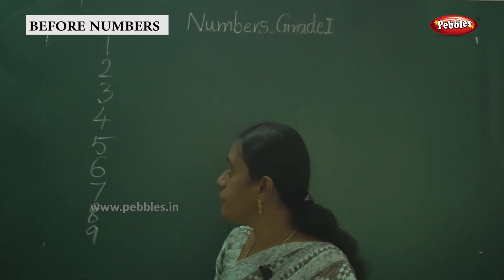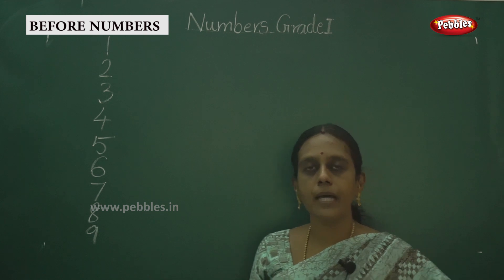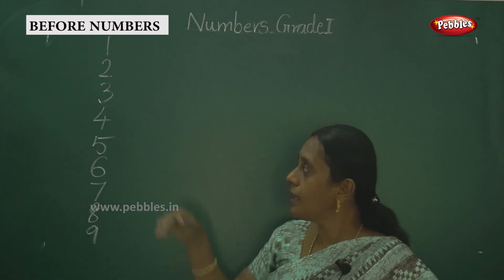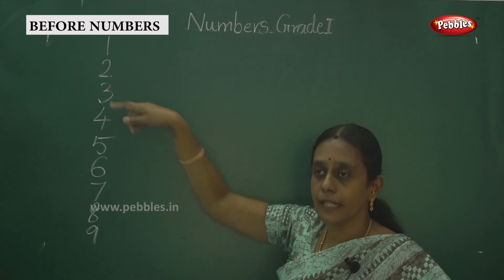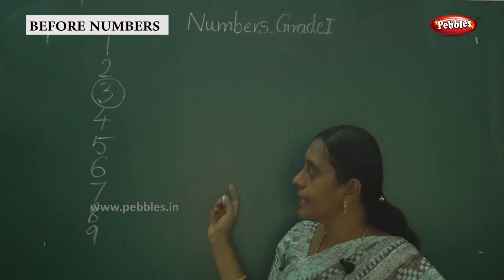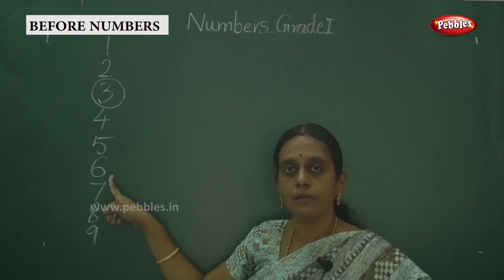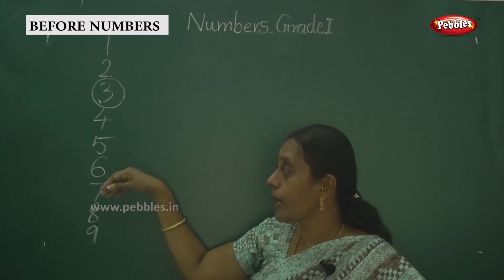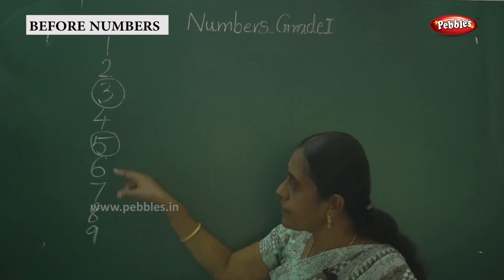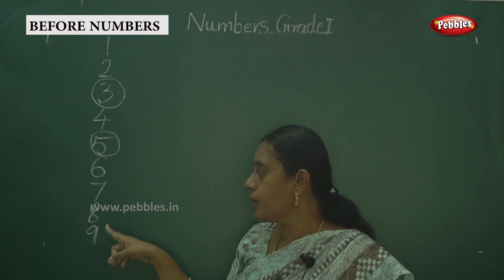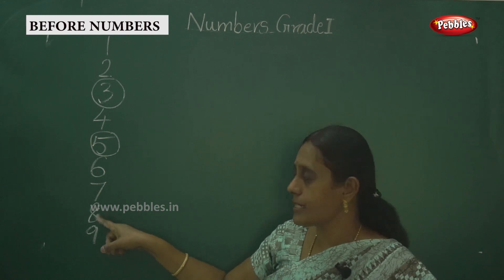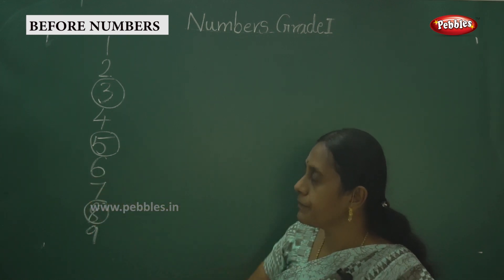What comes before 4? I am asking you which number lies before 4? Before 4, the number before it is 3. This is the before number. Then which number lies before 6? The number before 6 is 5. This is the before number of 6. Understand? And then which number lies before 9? The number before 9 is 8.